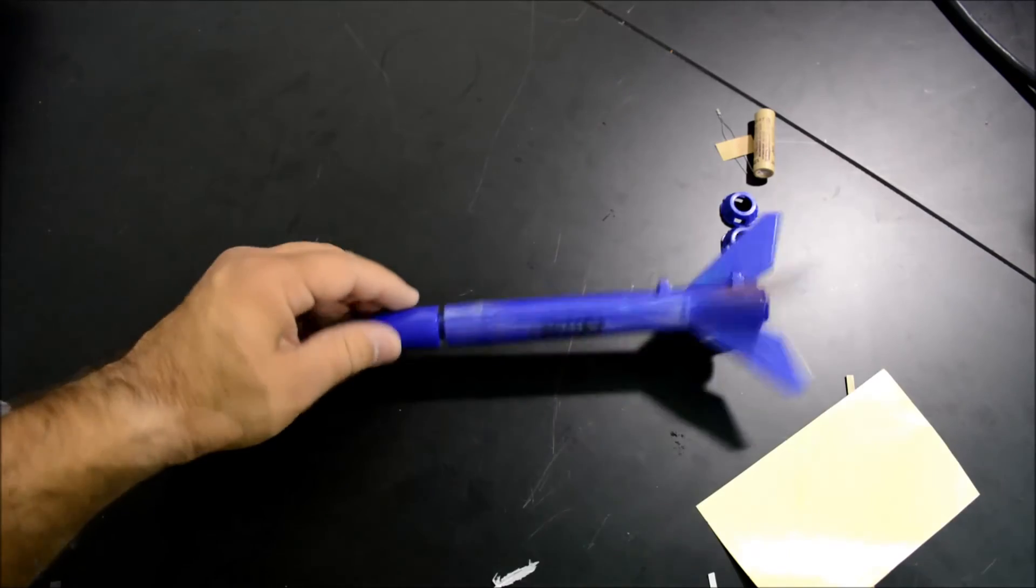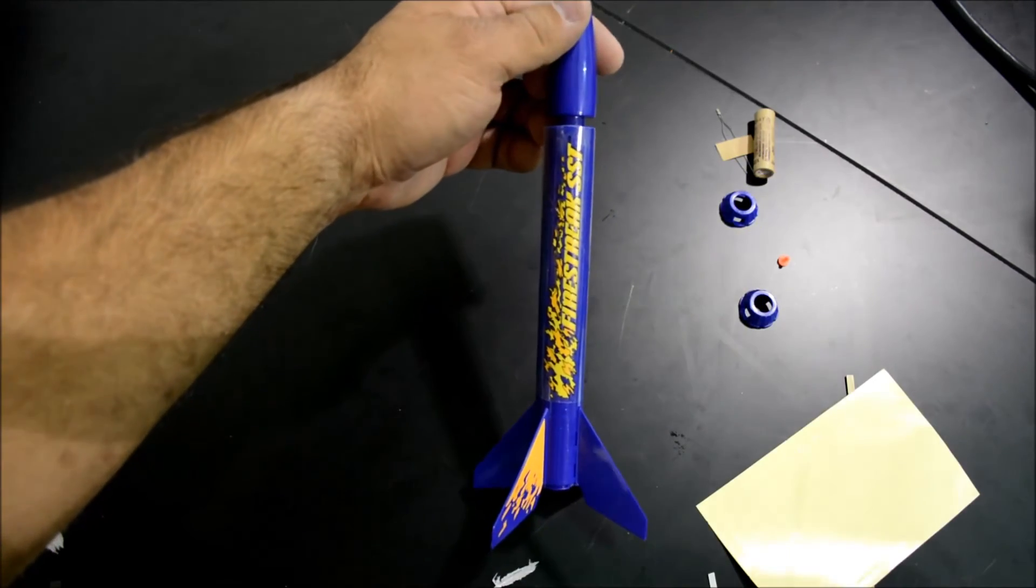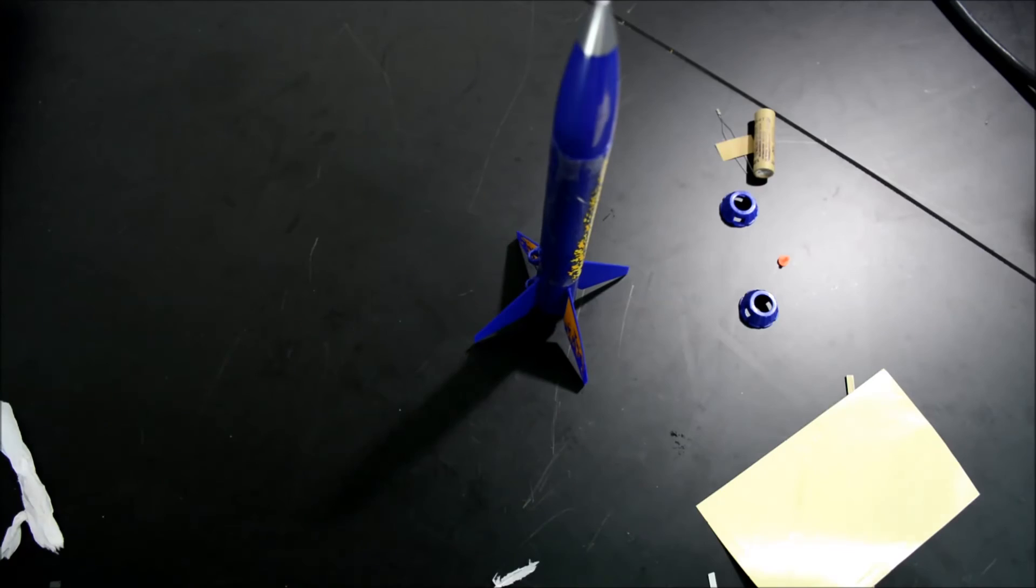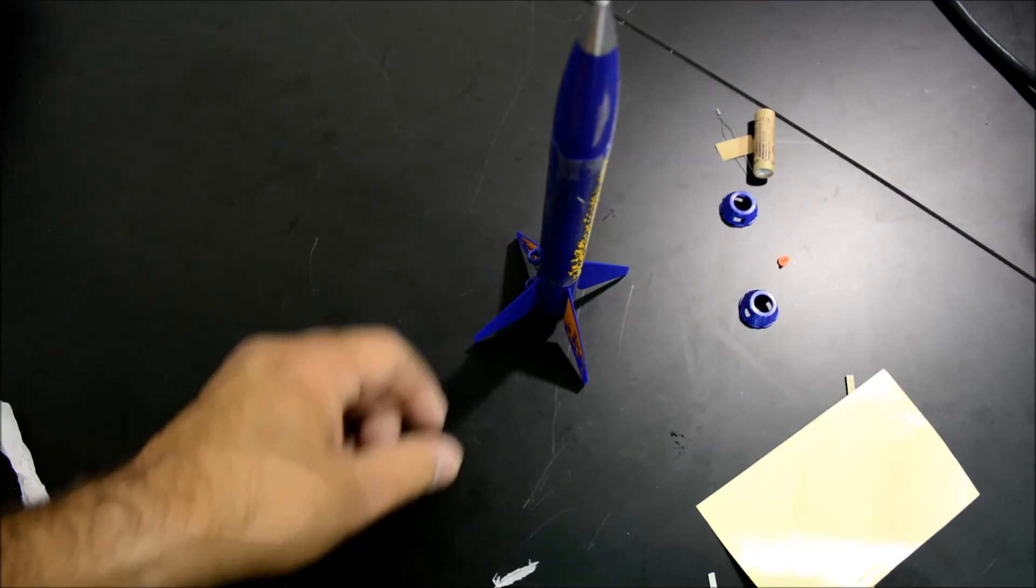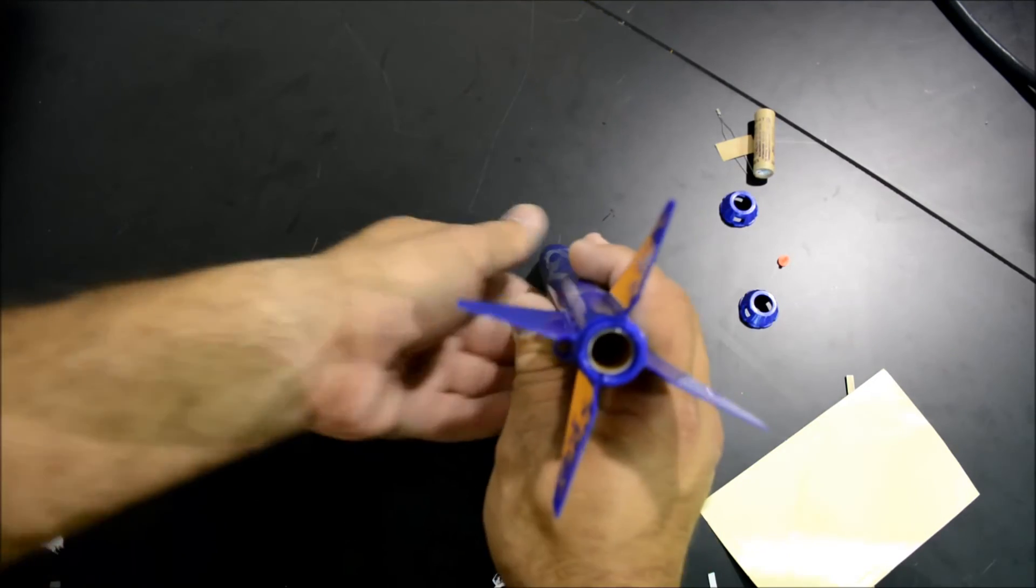There we go. We're going to have the Firestreak logo on the side of the rocket. The last thing we have to do is load the motor.